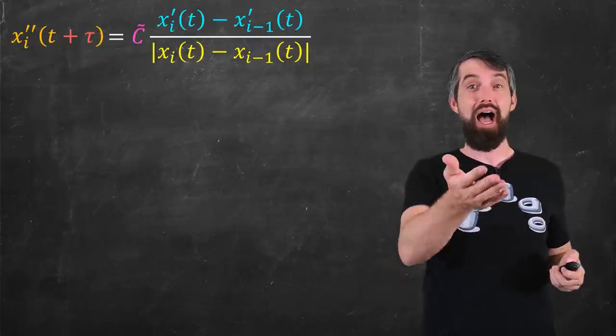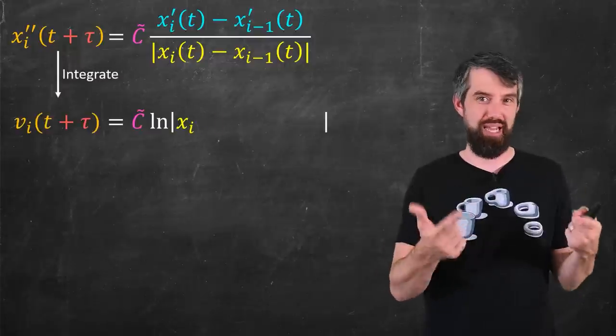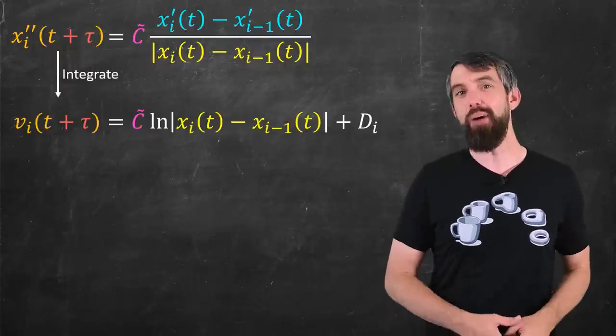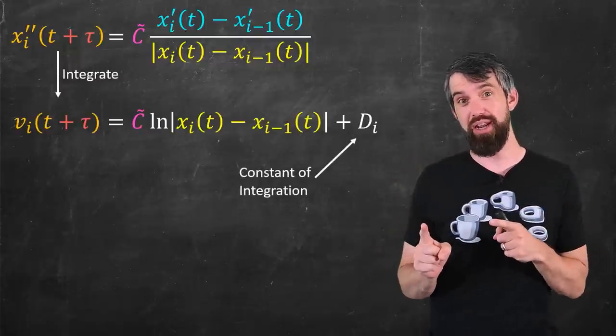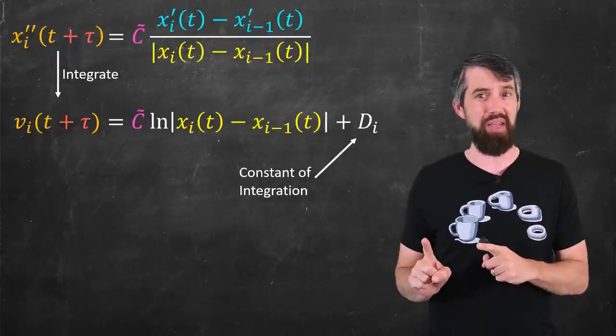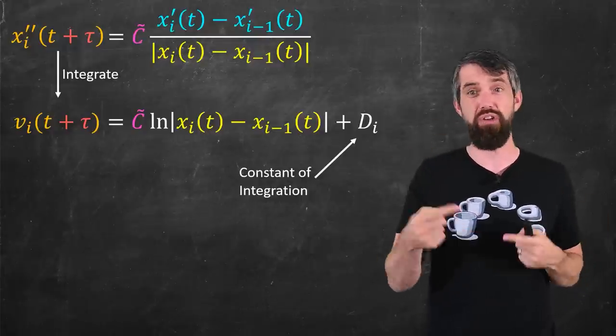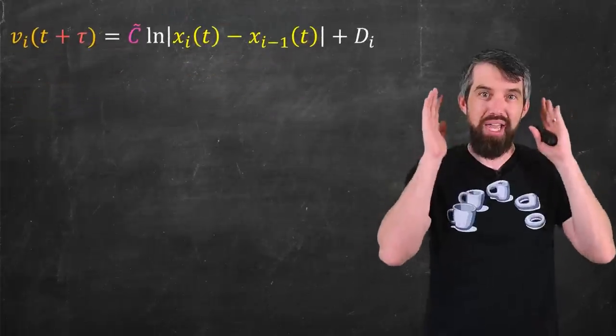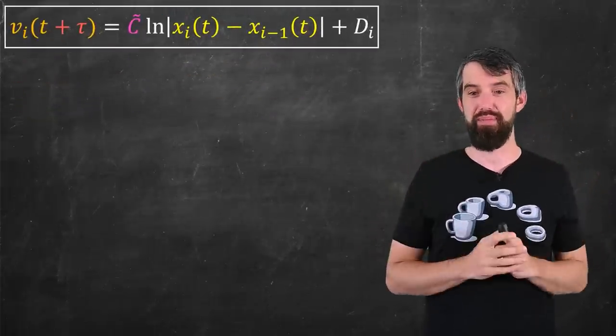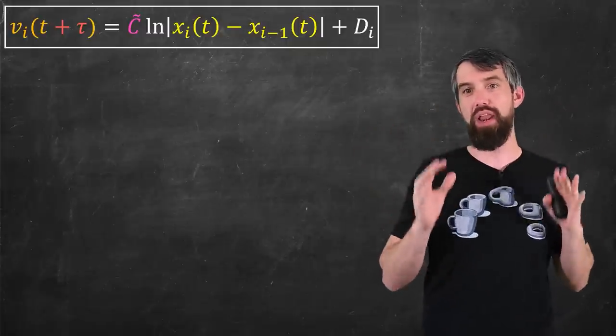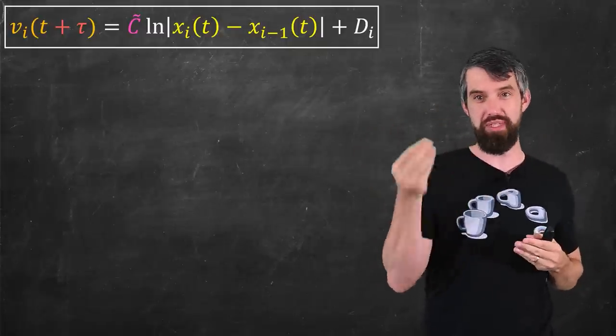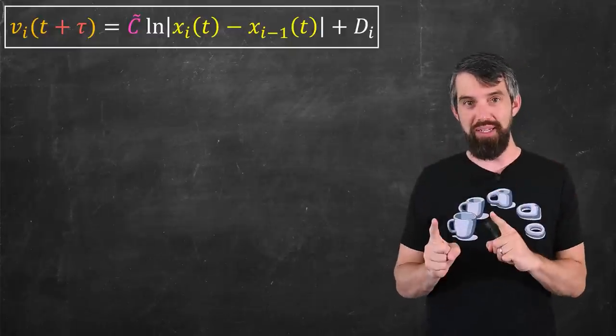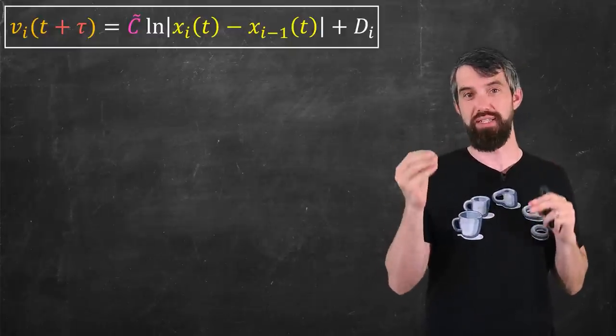This is how I'm going to simulate it, for example, later on. And so I'm just going to integrate once to go from accelerations to velocities. When I do an integration, that's going to pick up a constant of integration. I write it d_i because it could be different for every single car. Nevertheless, this is what I call my model, and there it is. This is the model that I'm going to work with: v_i(t + τ) is equal to a constant times the logarithm of the following distance plus some other constant d_i.